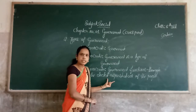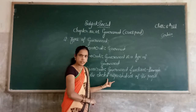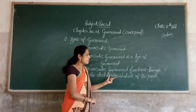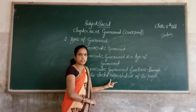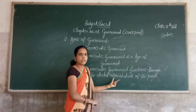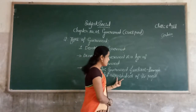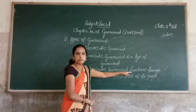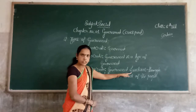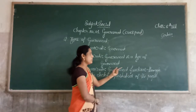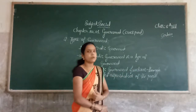Citizens above 18 years of age participate in the election and elect their representatives once every 5 years. They are called elected representatives. Elected representatives make the law and implement the order.